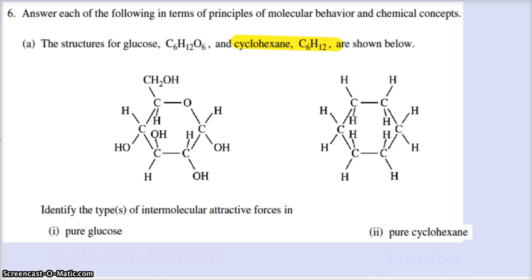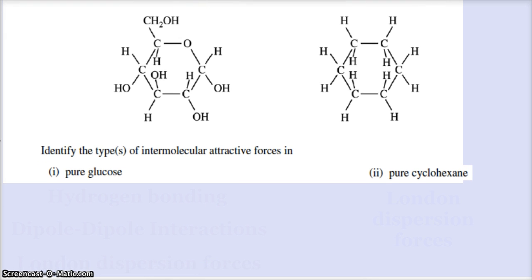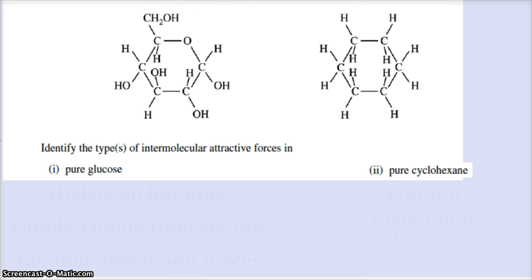The first question says identify the types of intermolecular attractive forces in these molecules. Hopefully you remember there are three types: London dispersion forces, dipole-dipole interactions, and hydrogen bonds. The one that every single molecule has in common is London dispersion forces. If a molecule is non-polar, that's where it stops. So our cyclohexane only has these London dispersion forces, LDFs.